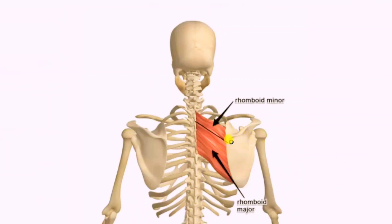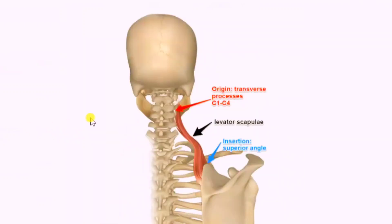The origination of rhomboid minor is at the ligamentum nuchae, and its insertion is at the medial border of the scapula near the base of the spine of the scapula. The next muscle is levator scapulae, originating from C1 to C4 cervical vertebrae and inserting at the superior medial angle and base of the spine of the scapula.